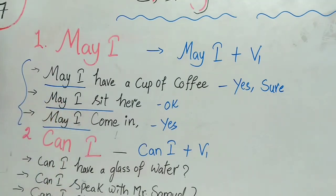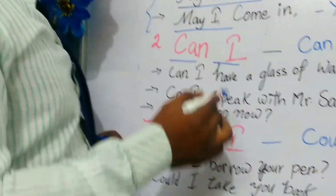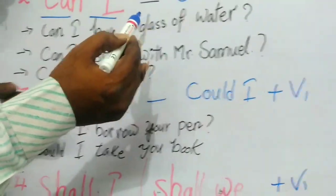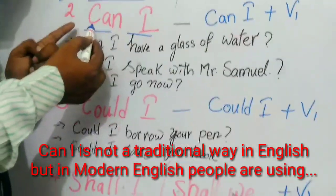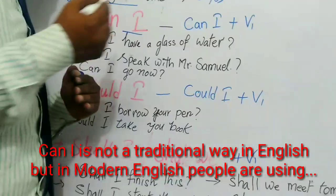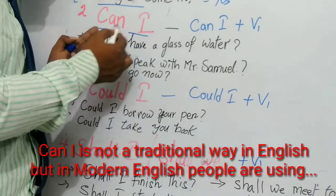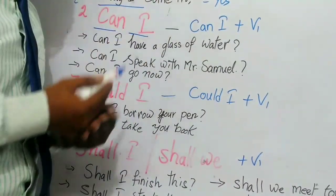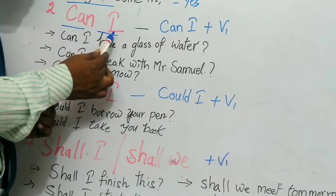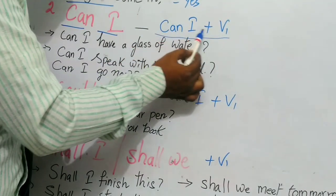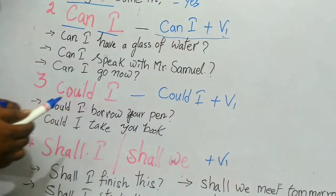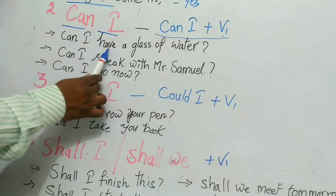Next we go for Can I. Of course, likewise May I, it is not exactly the traditional way, but nowadays in modern English people use Can I in their daily life to ask all kinds of permissions. The sentence structure is Can I plus verb base form, that means verb first form. Examples: Can I have a glass of water?